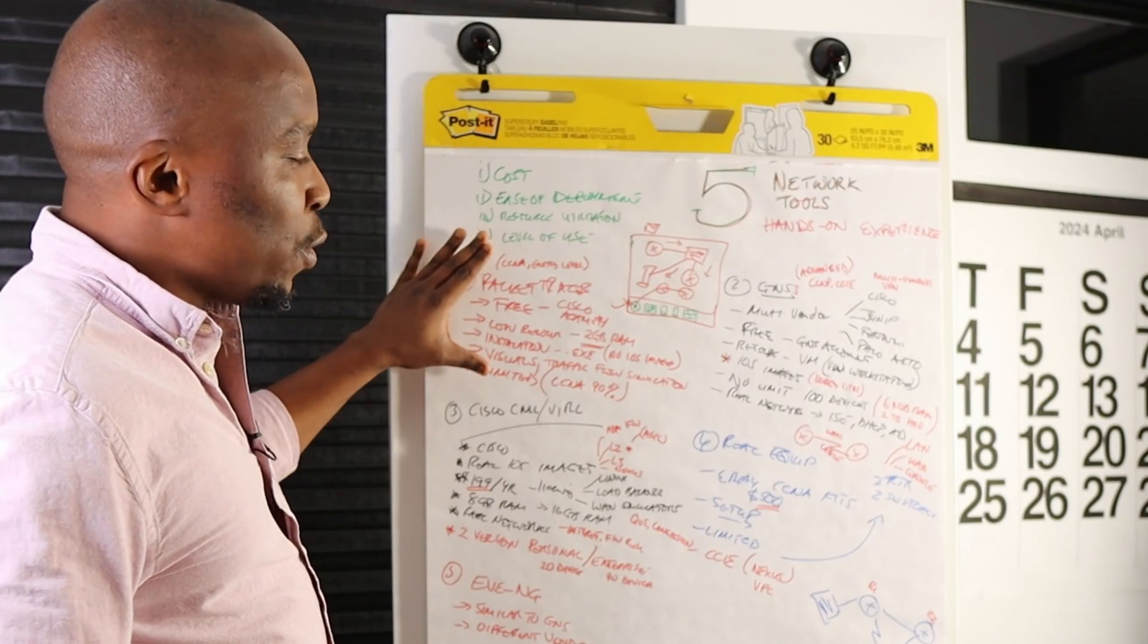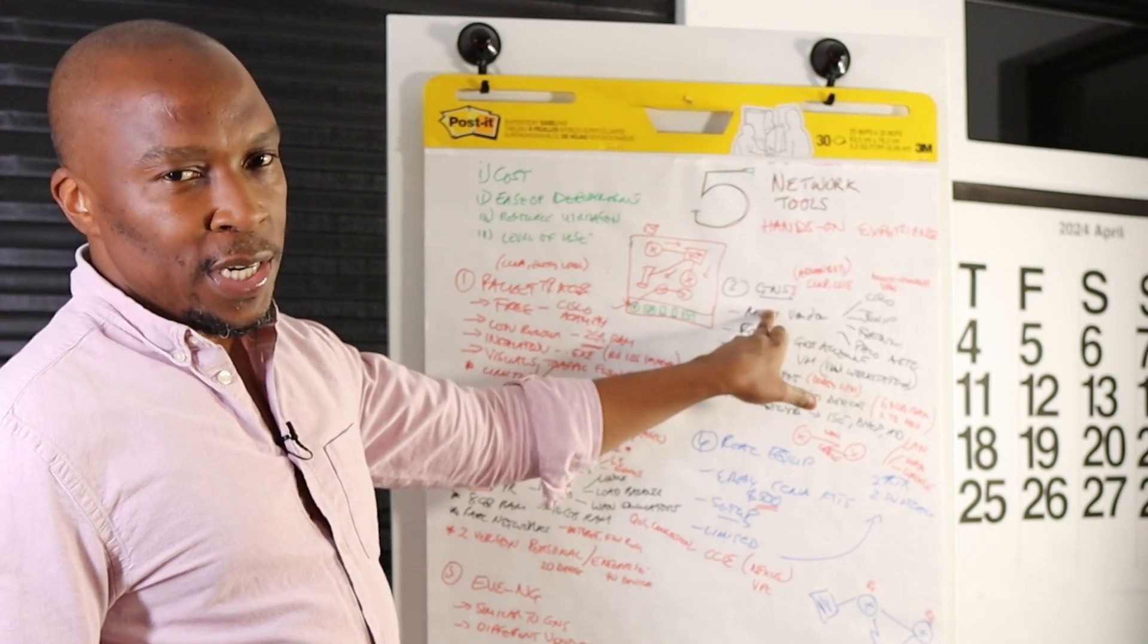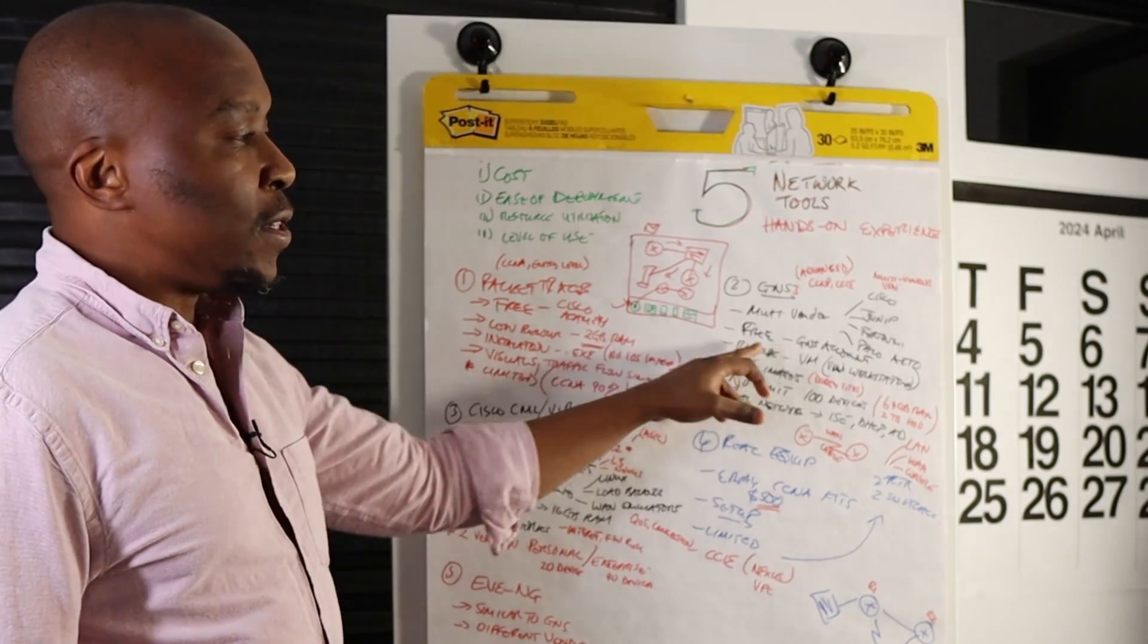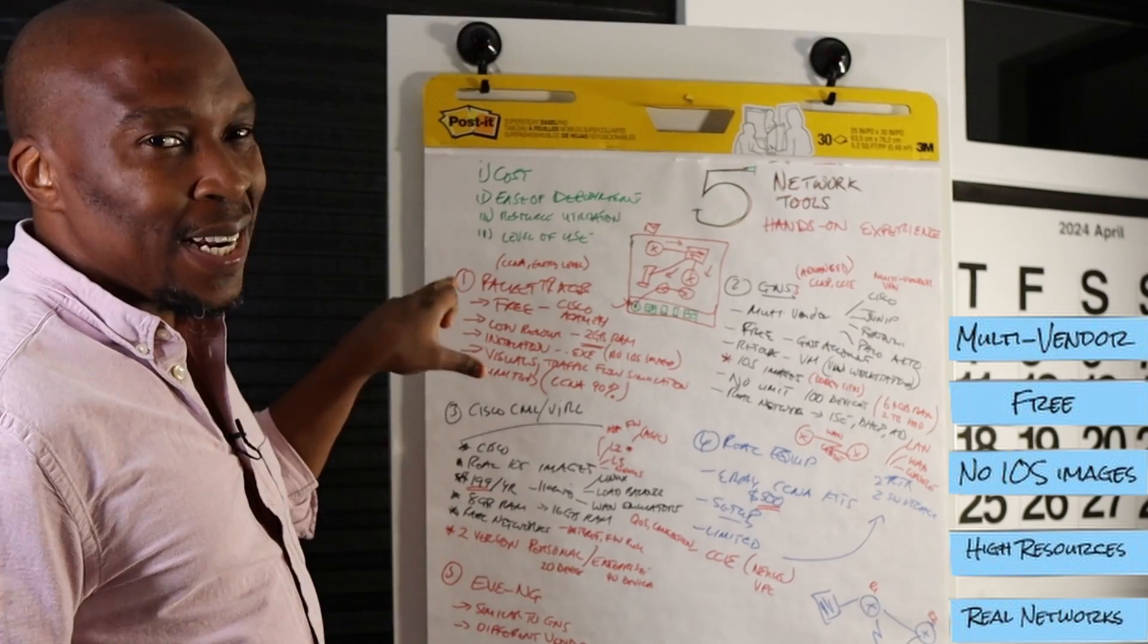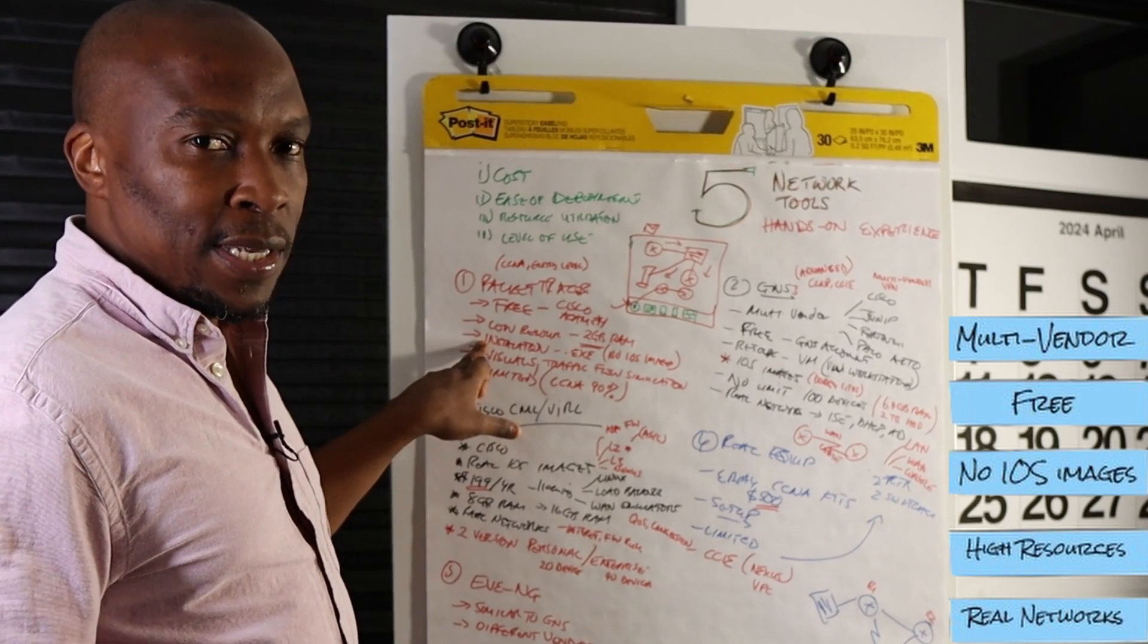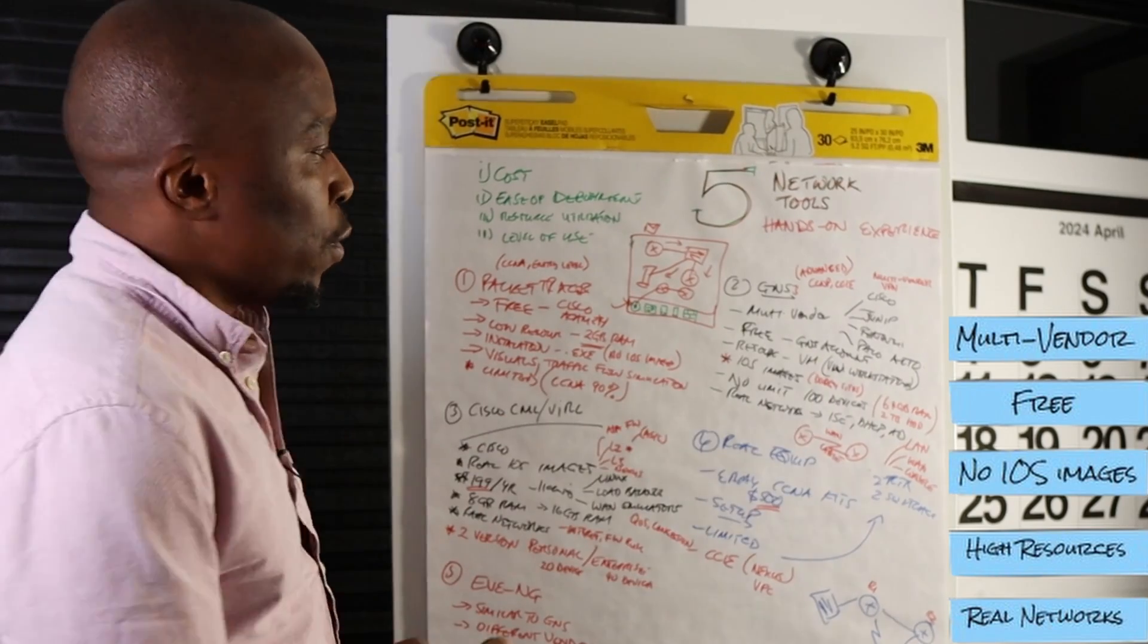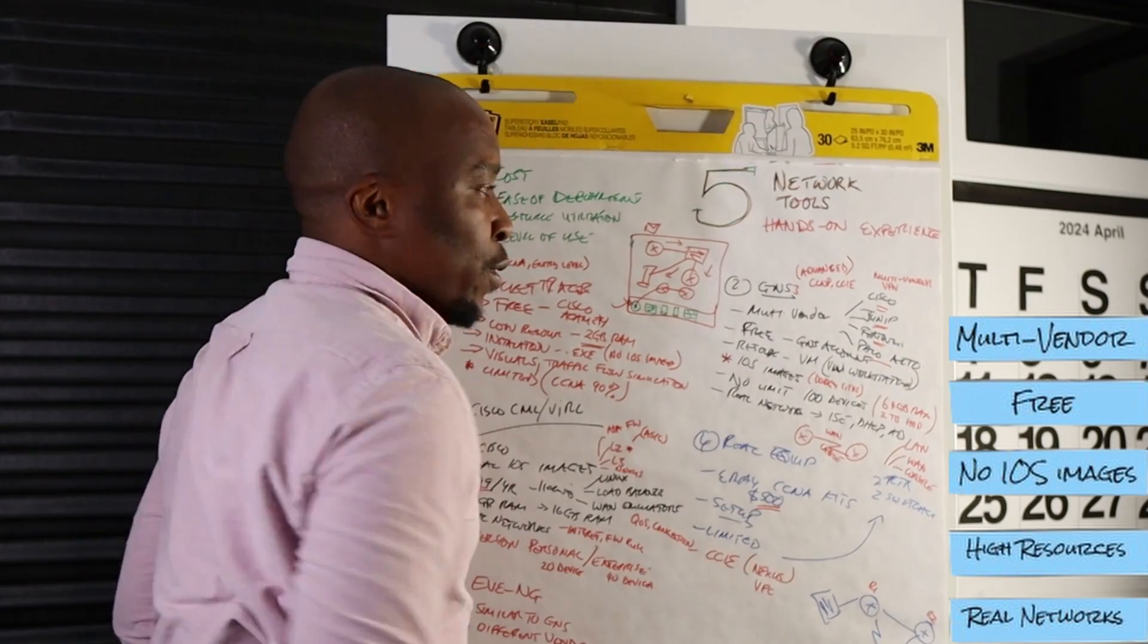Now for many people the natural progression path from Packet Tracer is going on to GNS3, which is the next tool that we're going to talk about. GNS3 is a multi-vendor tool. Packet Tracer is Cisco, which means that it only runs Cisco devices and nothing else. GNS3 on the other end is multi-vendor, so you can run Cisco, you can run Juniper, Fortinet or Palo Alto.